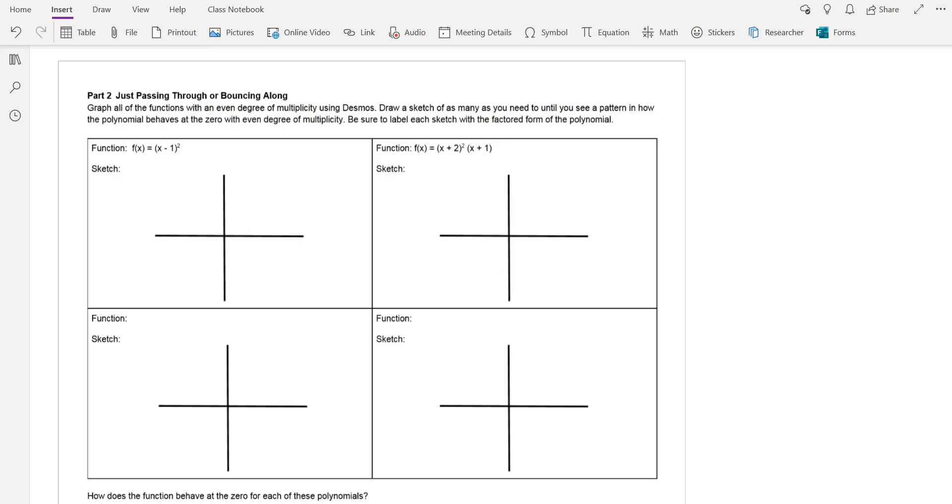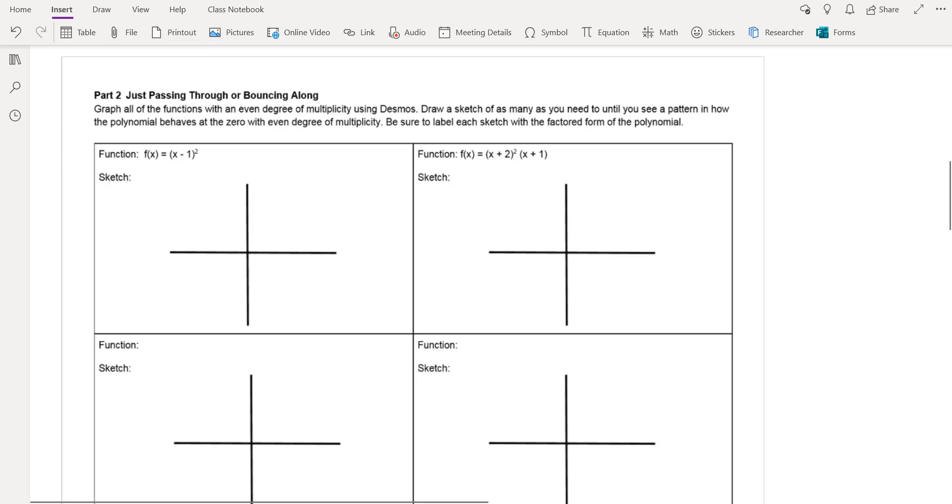So here we go. Let's take a look at these couple examples here. So just passing through or bouncing along. That's what we got to figure out, right? So we're going to take a look and I want you to pause the video and type x minus one squared, f(x) = (x - 1)² into your calculator or Desmos.